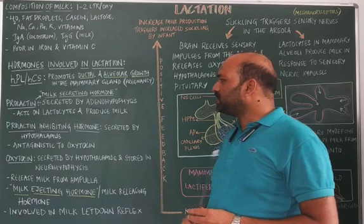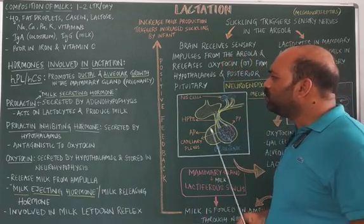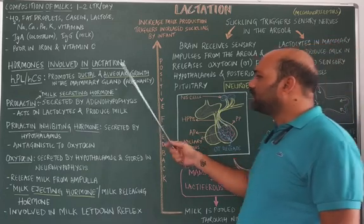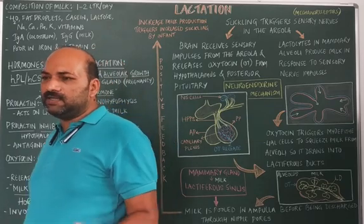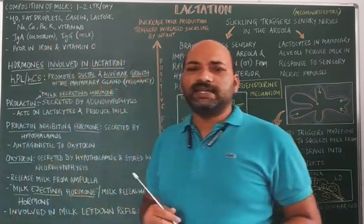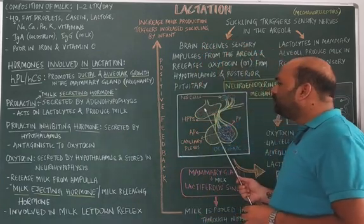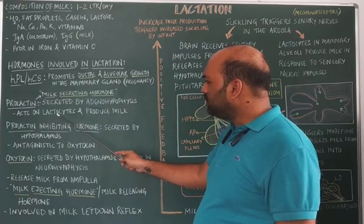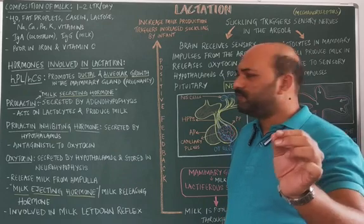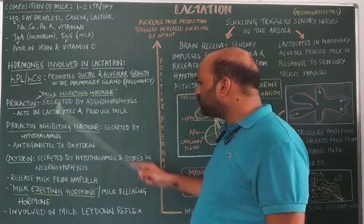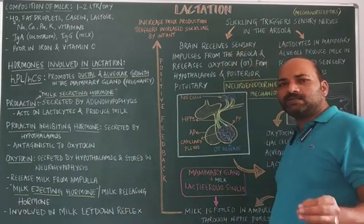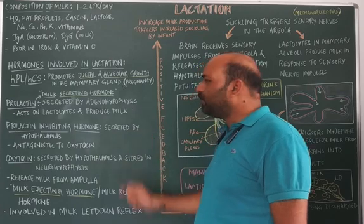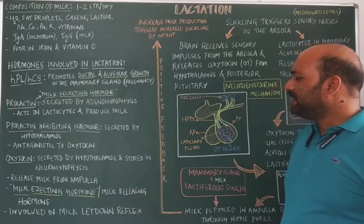The next hormone is prolactin, which is secreted by the adenohypophysis — the anterior pituitary — under the influence of prolactin releasing hormone from the hypothalamus. Prolactin acts upon the lactocytes, the cells responsible for milk production, and helps in the production of milk. Because prolactin is involved in milk formation, it is called the milk secreting hormone.